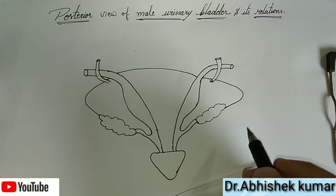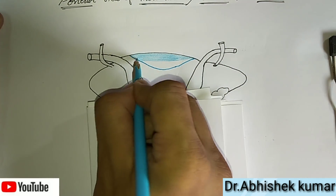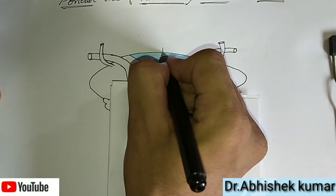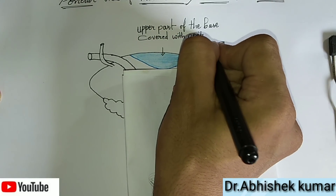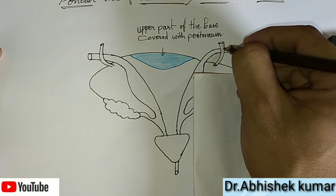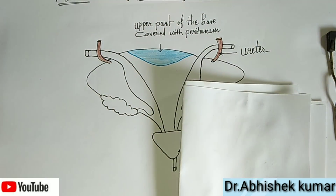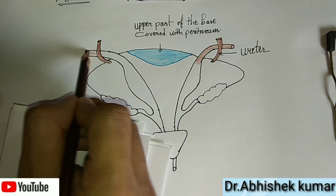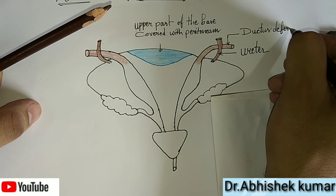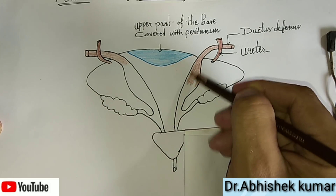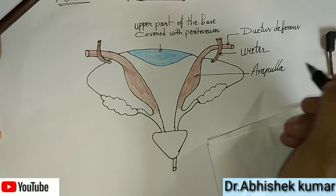We can also see the ampulla and the urethra. In sky blue color, this part is covered with the peritoneum — it is actually the base; the upper part of the base is covered with the peritoneum. In brown color, the ureters are shown on both sides in their posterior relation to the urinary bladder. The ductus deferens is present on both sides, and the bulging part — the ampulla — is also present on both sides.